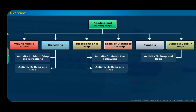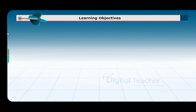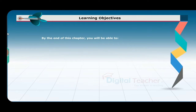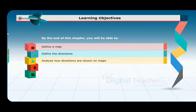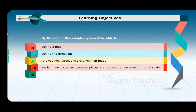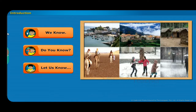This slide presents the overview of the chapter learning objectives. By the end of this chapter you will be able to define a map, define the directions, analyze how directions are shown on maps, explain how distances between places are represented on a map through scale, and describe the symbols used in maps.